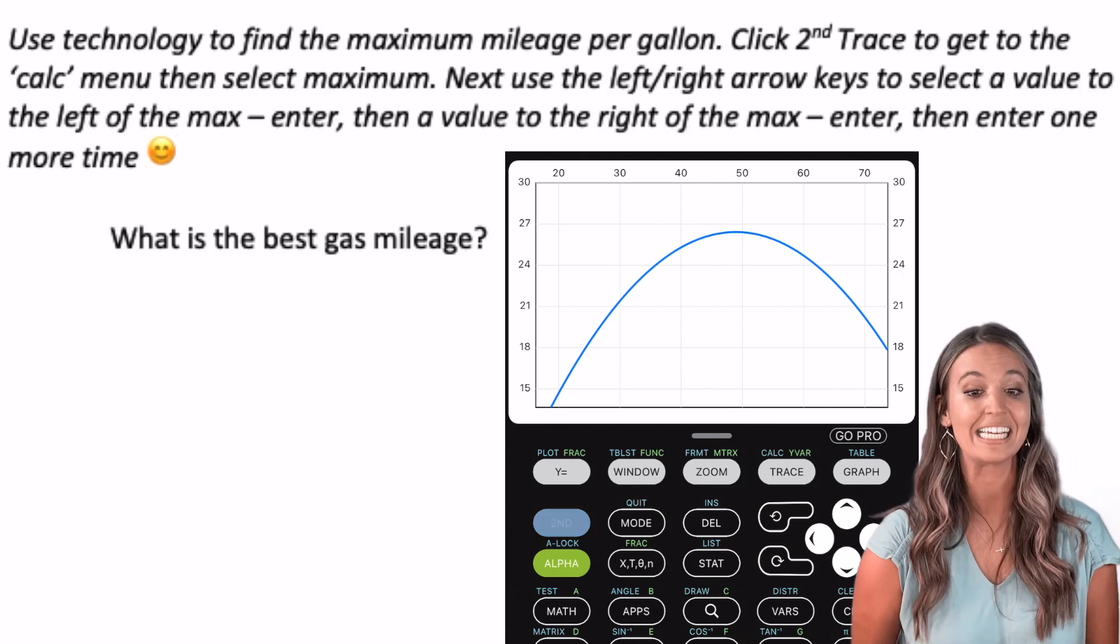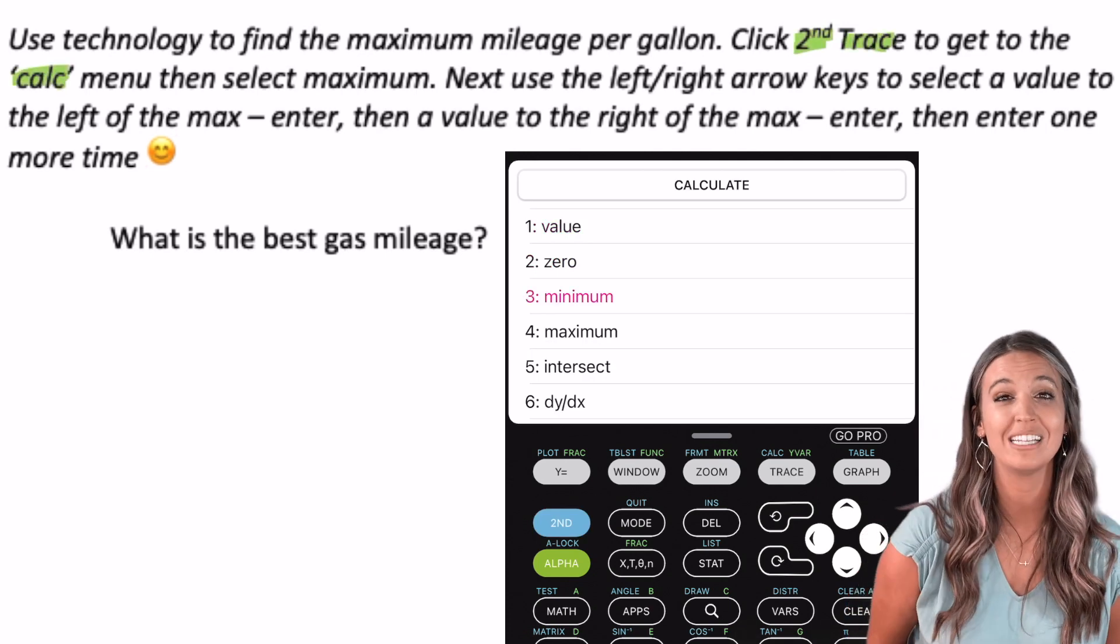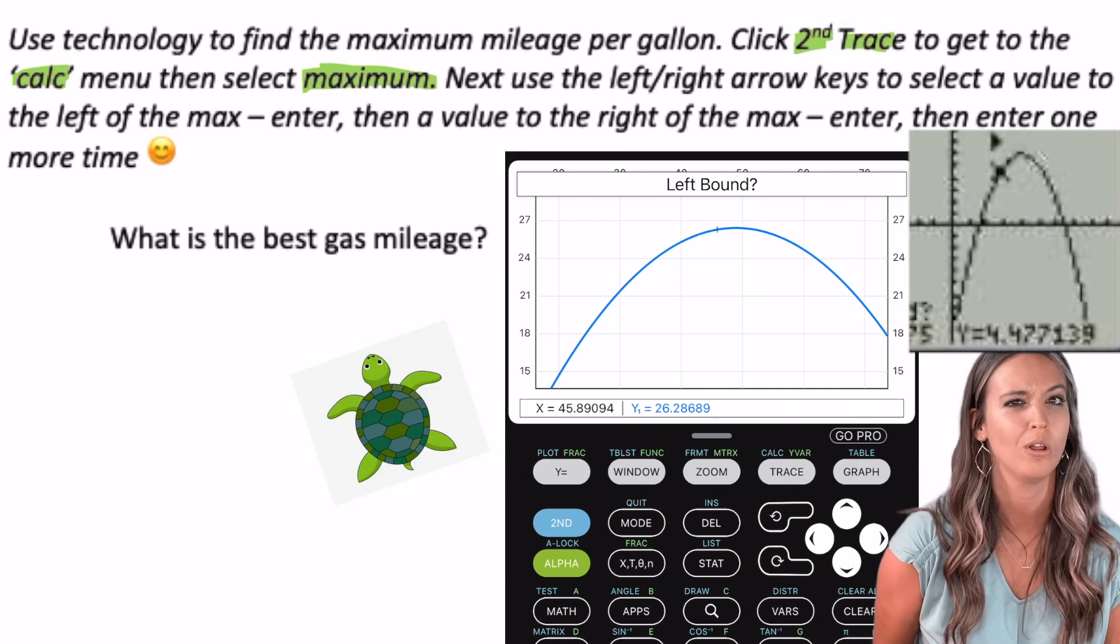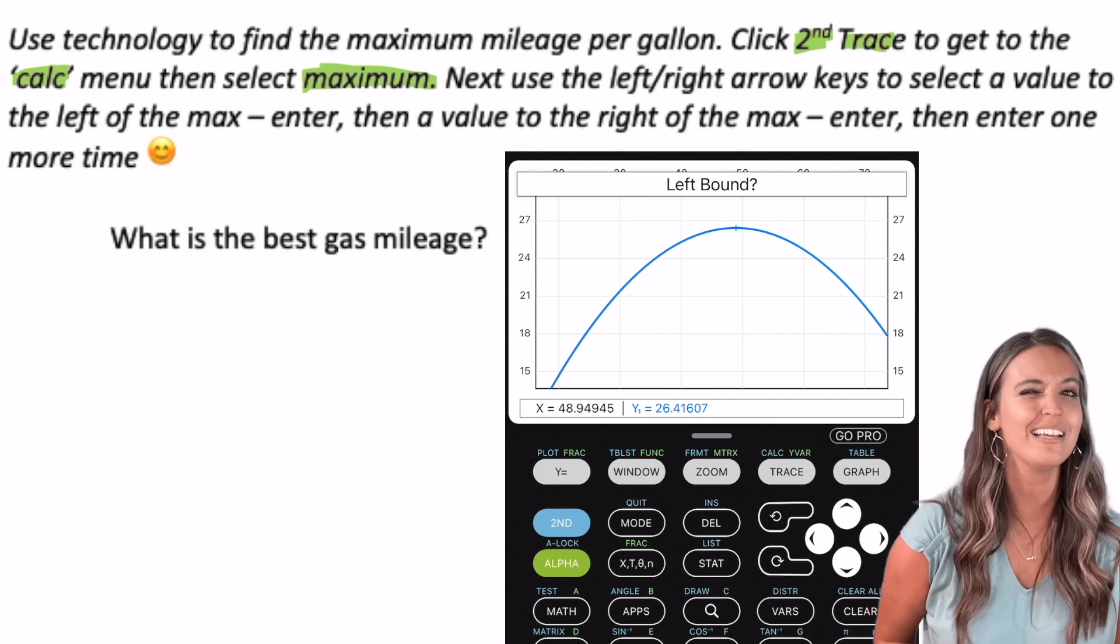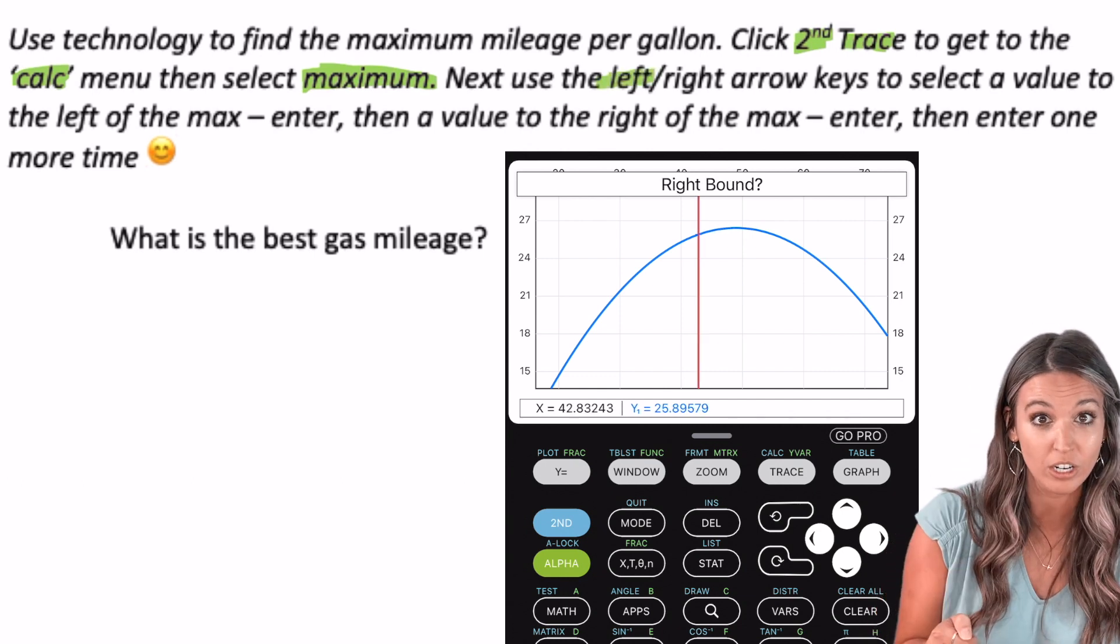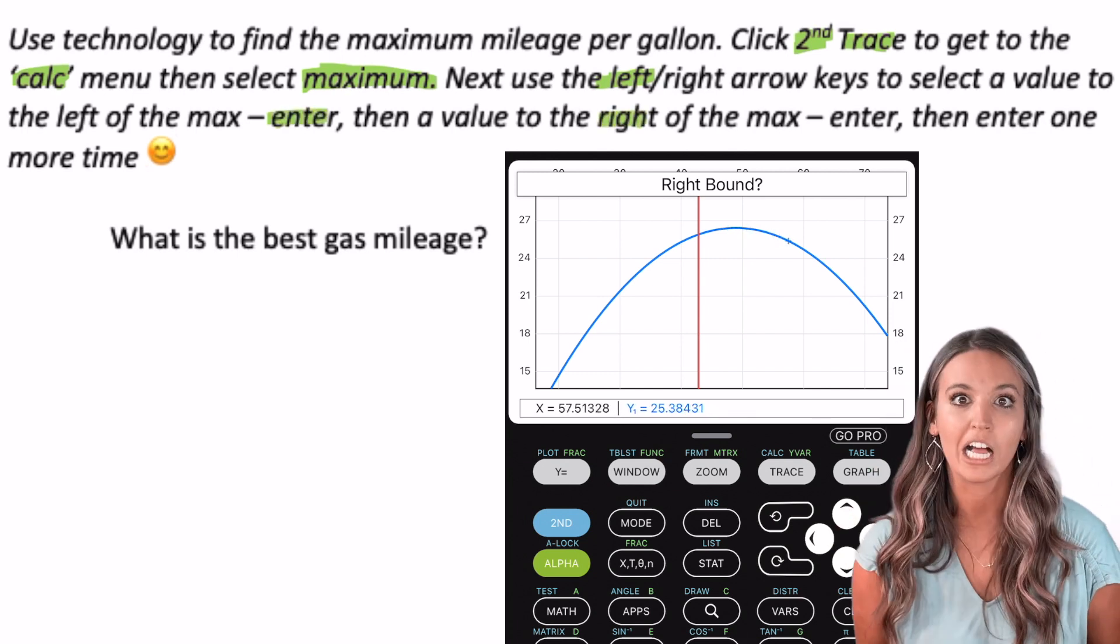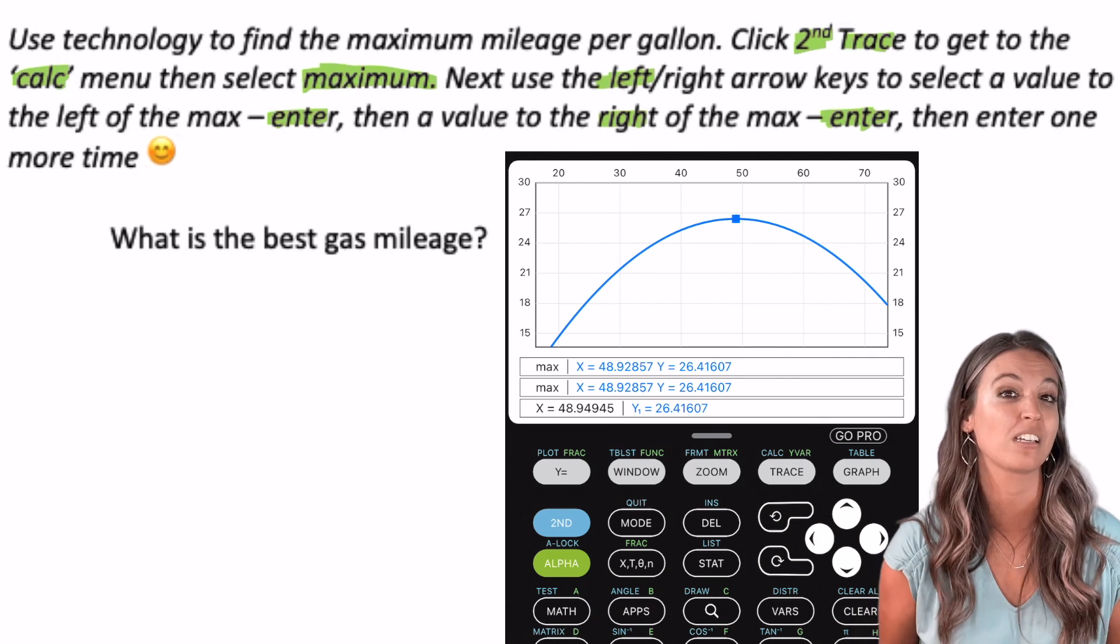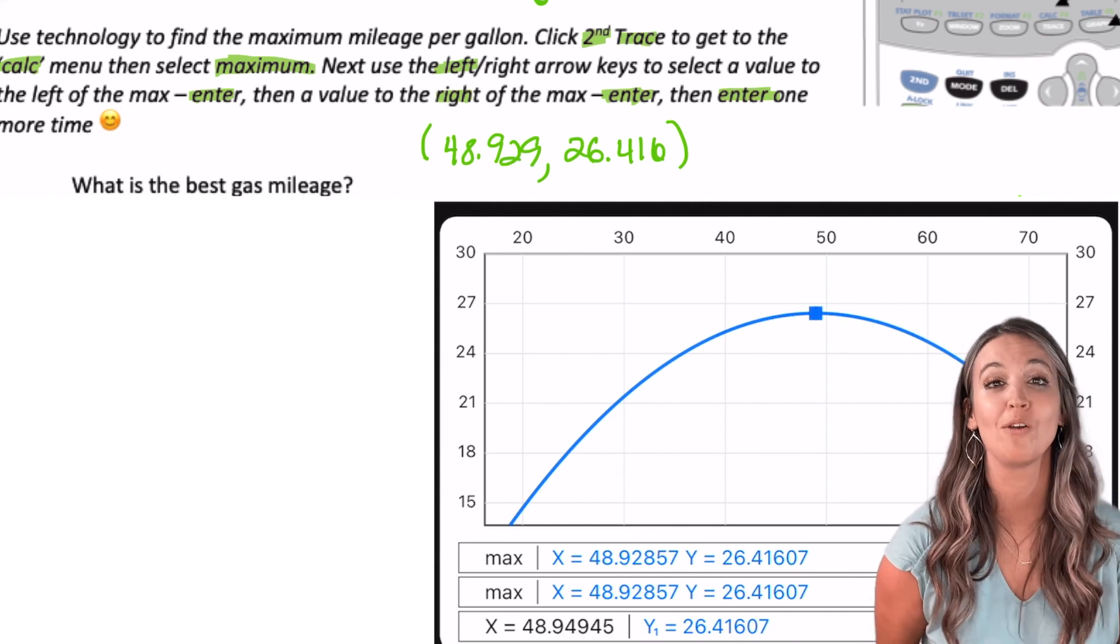To do this, we're going to click second trace. This gives us the calc menu. We're going to scroll down and select maximum. Now, I'm taken back to my graph and we get this little cursor. It almost looks like a little turtle. I'm going to arrow my little turtle over to where I think the maximum is. Now that he's sitting there, I'm going to click three to the left because my calculator is asking for the left bound and click enter. Then my calculator says right bound. So I'm going to go back to the middle and click three to the right and click enter. Last, my calculator says guess. And I can take a guess at where I think the maximum is at. So I'll move my cursor and click enter.